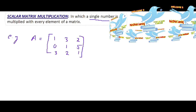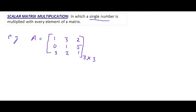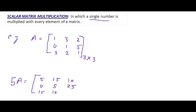The order of this matrix is three cross three. If we have to multiply this matrix by any scalar number — say we multiply A by five, that means we find five A. We multiply every element by five: five into one is five, five into three is fifteen, five into two is ten, five into zero is zero, five into one is five, five into five is twenty-five, five into three is fifteen, five into two is ten, five into one is five.